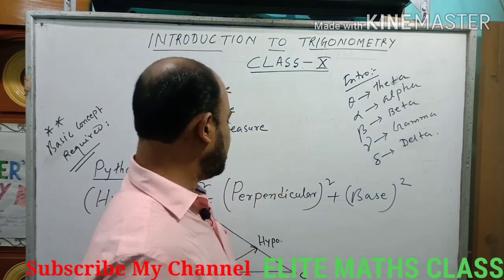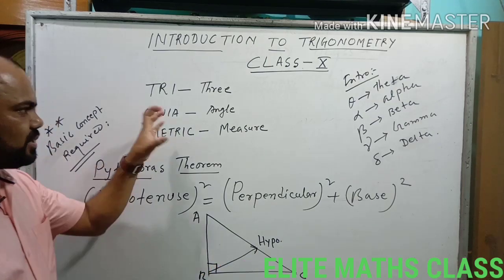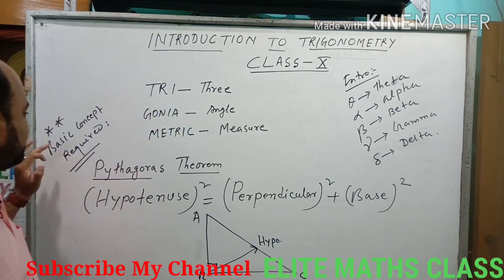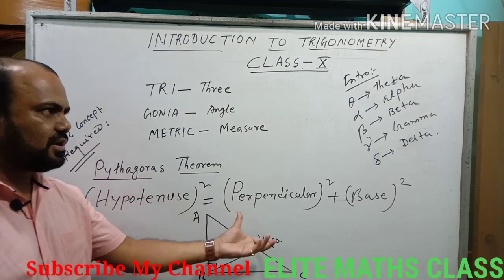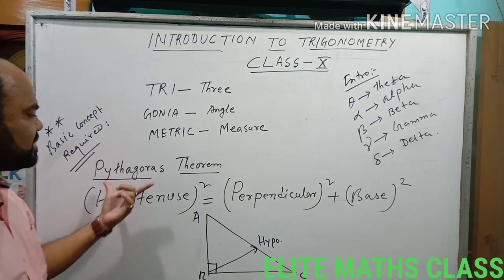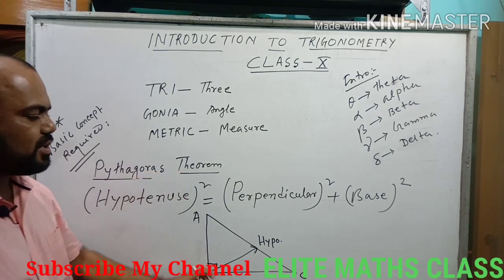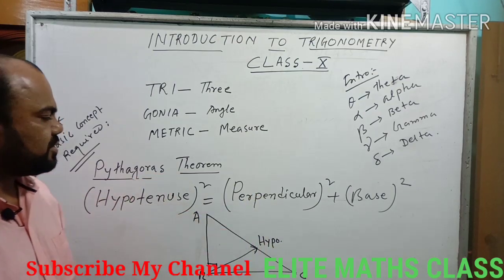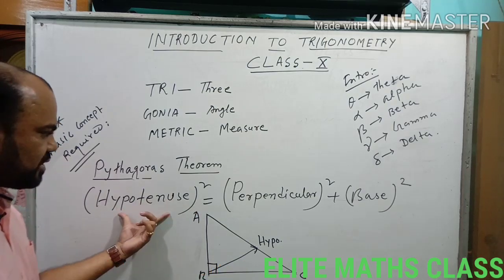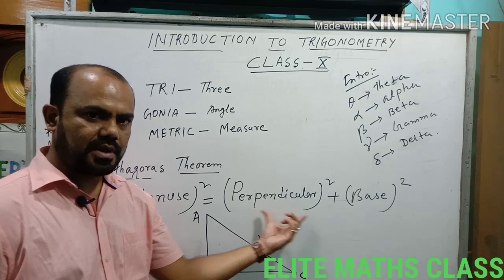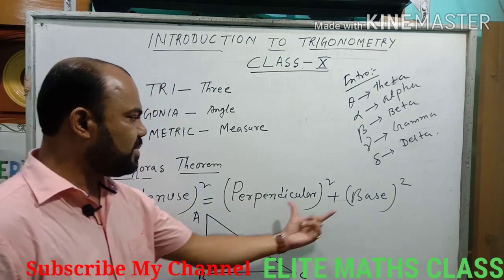Now, what basic concepts are required to study Trigonometry? One basic concept — already there in the class 9 syllabus — is the Pythagoras theorem. You have to use the Pythagoras theorem in every part of Trigonometry. Pythagoras theorem states: Hypotenuse squared equals Perpendicular squared plus Base squared.